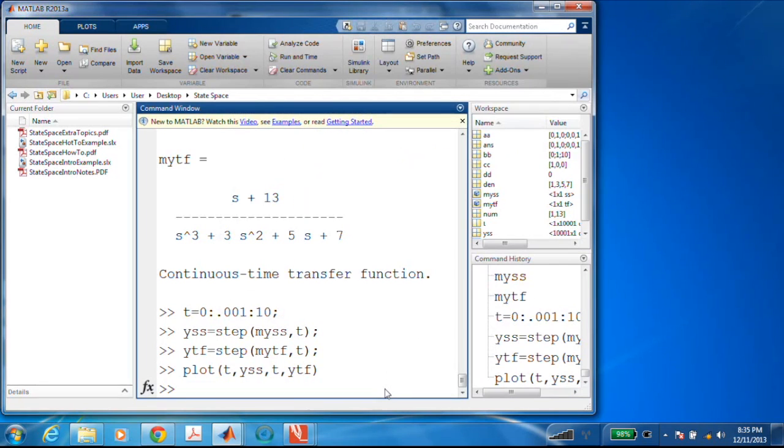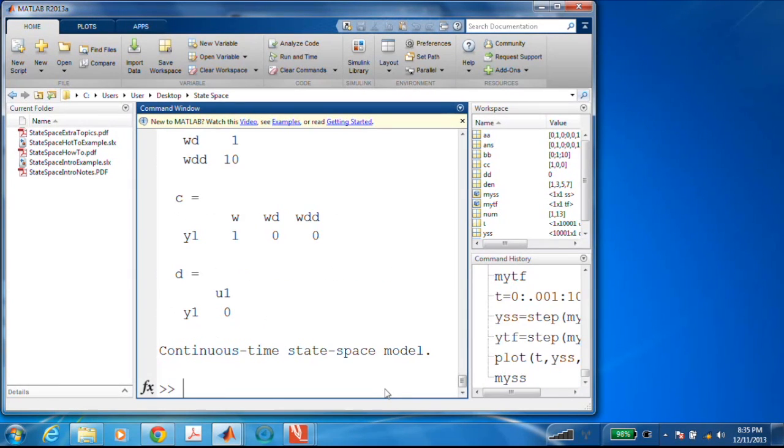I'll show you just one other little trick you can do. If you create the state space realization, like we did, right, we have our mySS, we have an A, B and a C and a D matrix, we can use a MATLAB command called SS to TF that can convert or extract from that state space realization, a transfer function.